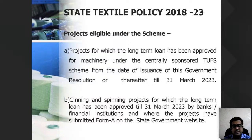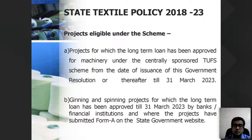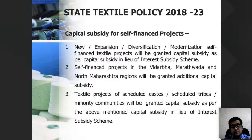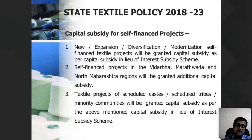Regarding project eligibility under the state scheme: like ATUFS, it is also credit linked. Projects for which a long-term loan has been approved for machinery under central TUFS are eligible; ginning and pressing units with long-term loans approved by 31/03/2023 by banks are also eligible. Additionally, the state government has also incentivized self-finance projects — even those putting up units from their own funds without bank loans are eligible under state TUFS, unlike the central scheme.